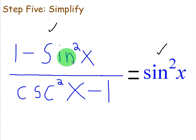So the final answer for step five is sine squared of x. So we've just taken the Pythagorean identities, we've taken something one minus sine squared over cosecant squared minus one, which is very complicated. We've simplified it down to sine squared using these five simple steps. If you have any other questions about this example, let me know.